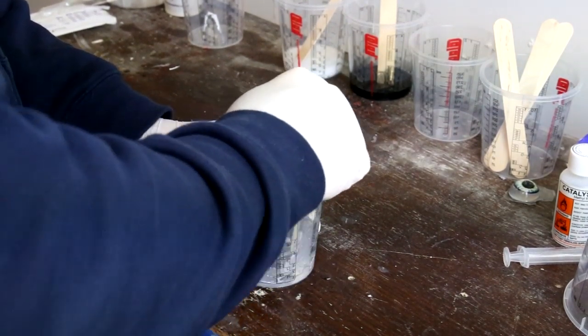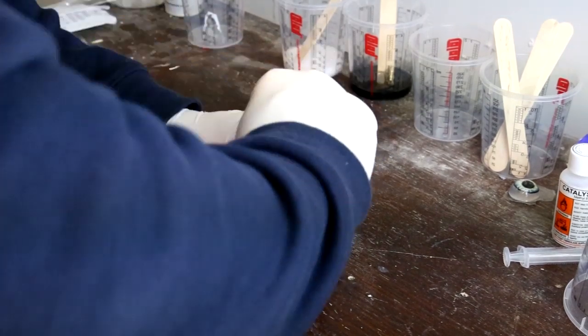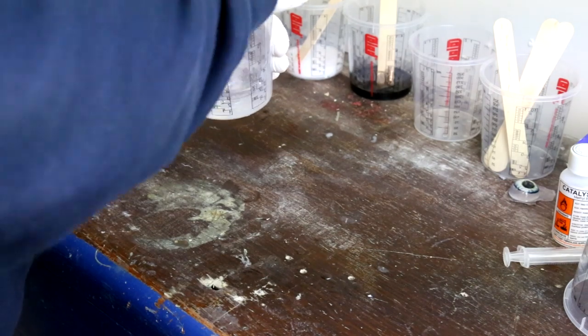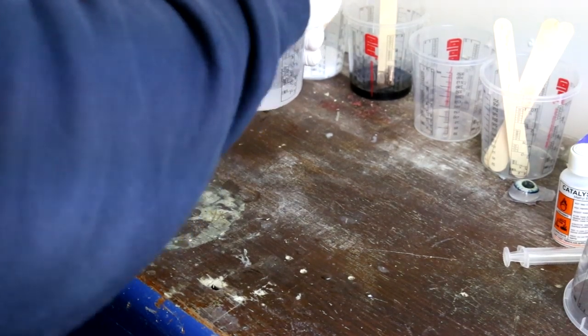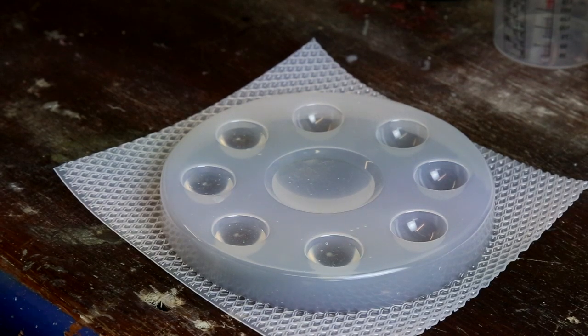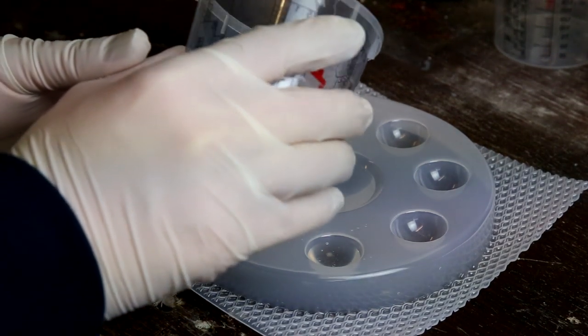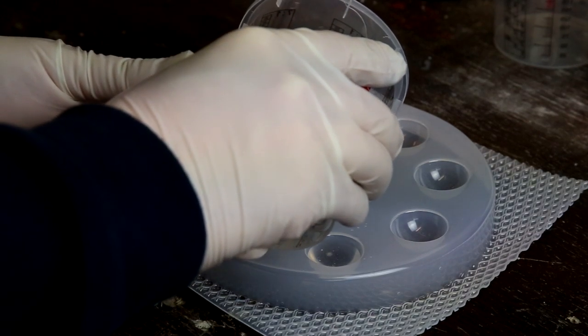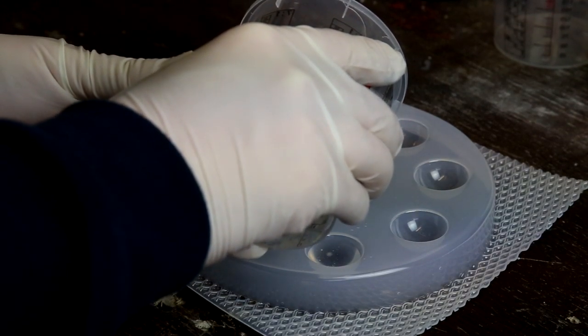Once the resin's catalyzed, you do have a fair bit of time to work with it before it starts to go to a jelly sort of consistency. And what I'm going to do is just pour the resin into the mold about halfway up. Let that sort of semi-set, then add my printed eyeballs and then backfill.